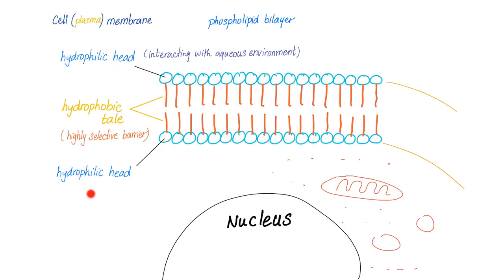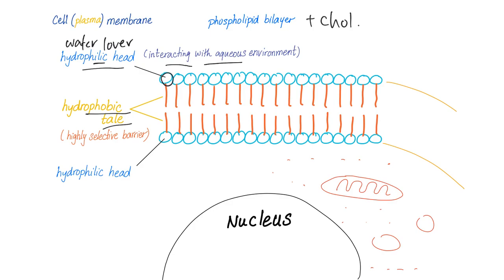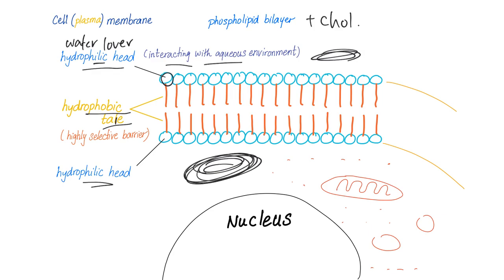The cell membrane, also known as the plasma membrane, is a lipid bilayer — mostly phospholipid plus some cholesterol. It has a hydrophilic head and a hydrophobic tail. The hydrophilic head, meaning water lover, interacts with water outside of the cell, and likewise the hydrophilic head on the inner side interacts with the aqueous environment inside the cell. The hydrophobic tail is highly selective — not anything can enter, and not anything can exit. There is order.